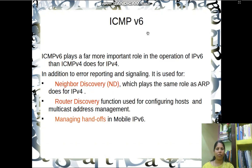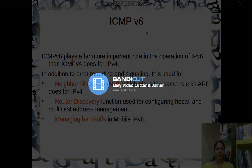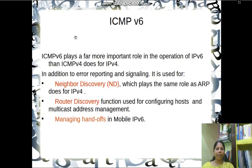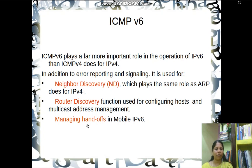Next is ICMP version 6. In addition to error reporting and signaling, ICMP version 6 has three additional features: neighbor discovery option, router discovery option, and managing handoff function for mobile IPv6. That concludes the first session. Thank you for listening.